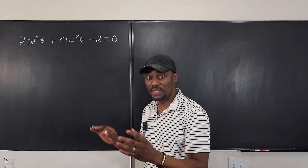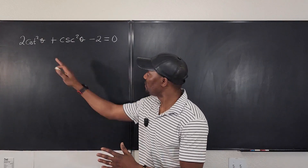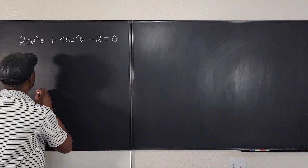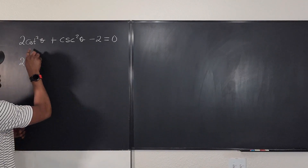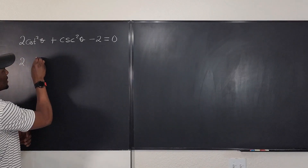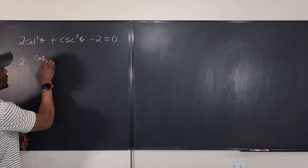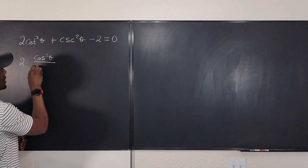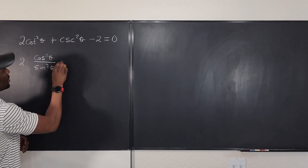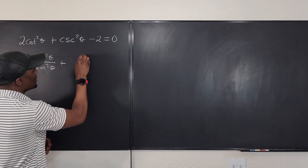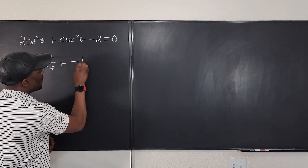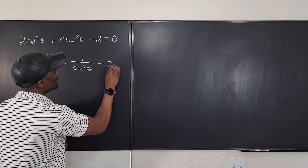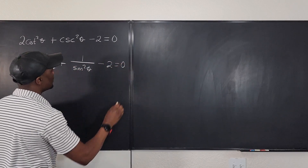The first thing we're going to do is rewrite each of these terms in terms of sine and cosine. So we're going to say that this is 2 — cotangent is cosine, so it is cos squared theta over sine squared theta, plus cosecant which is 1 over sine squared theta, and you have minus 2 is equal to 0.